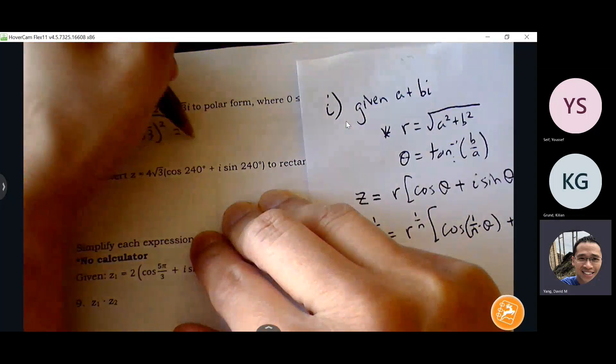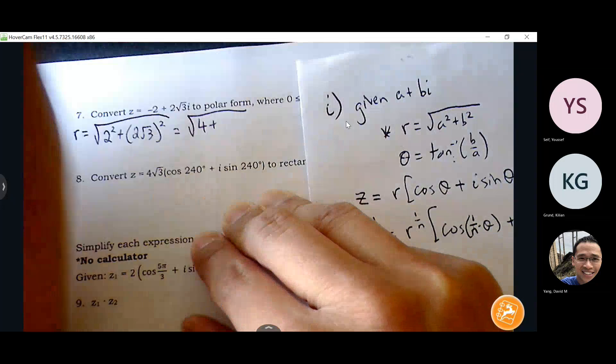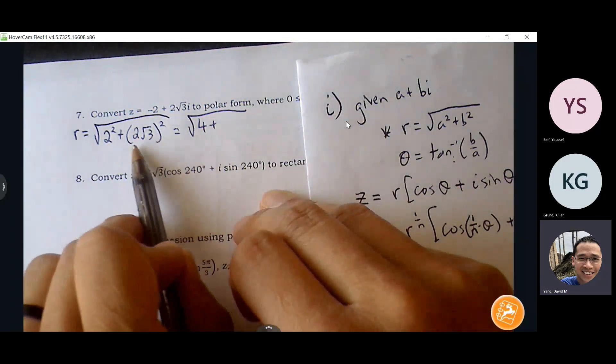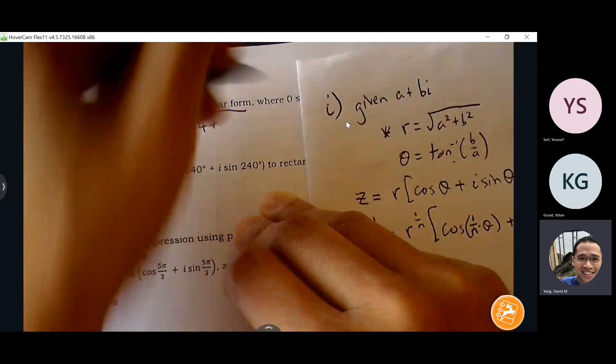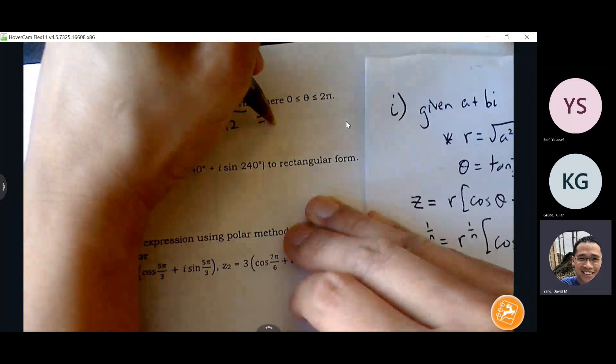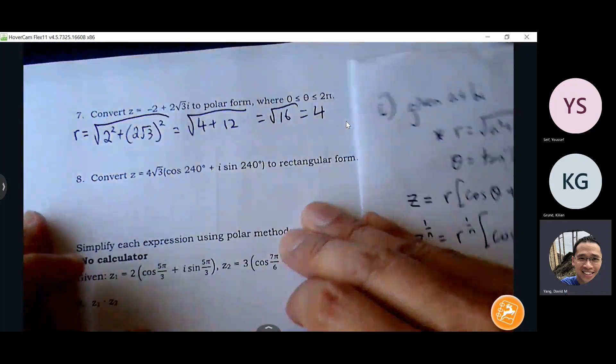Okay, so two squared is four. Now, two root three squared, I've got to square both my two and the root three, so it's four times three, which is 12. So root 16 is four. My r.